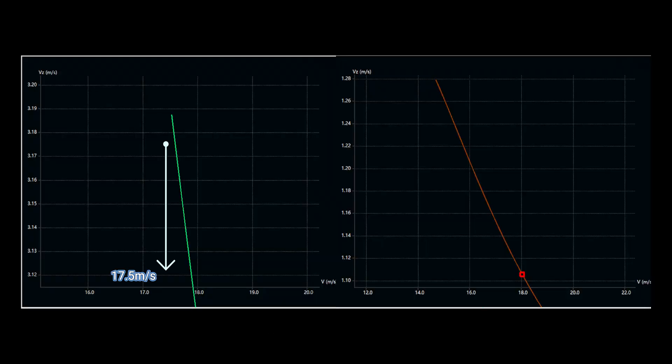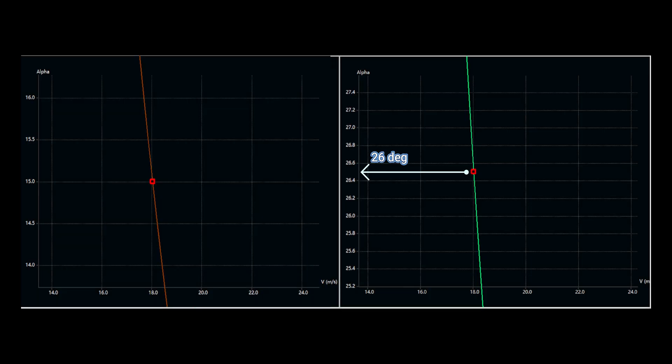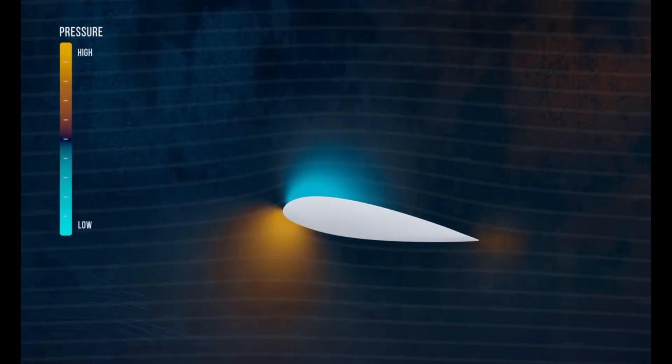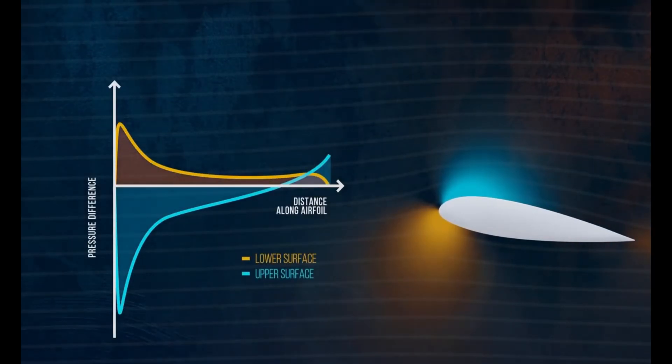After running the calculations and tests, the stall speed dropped from 17.5 meters per second to about 14.5 meters per second, while the stall angle of attack decreased from over 20 degrees to around 15 degrees, at the regulatory stall speed of 18 meters per second. This means the aircraft can now maintain lift performance at a smaller angle of attack. At this point, the wing area has increased to approximately 12.276 square meters.